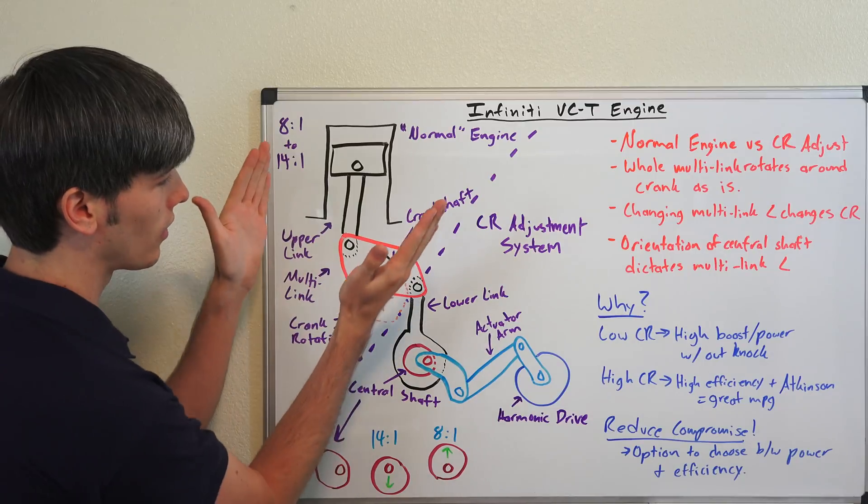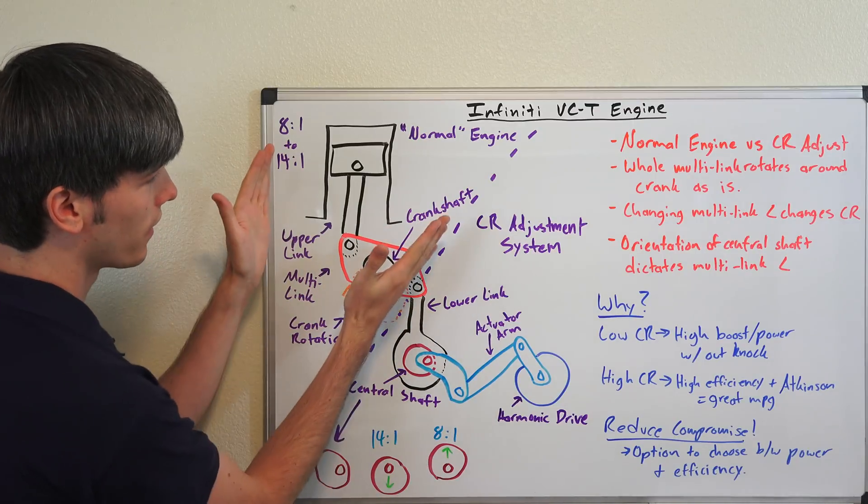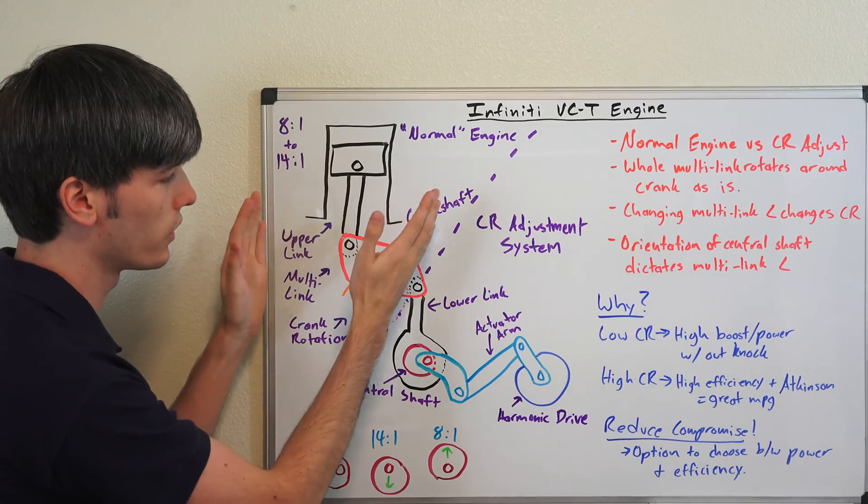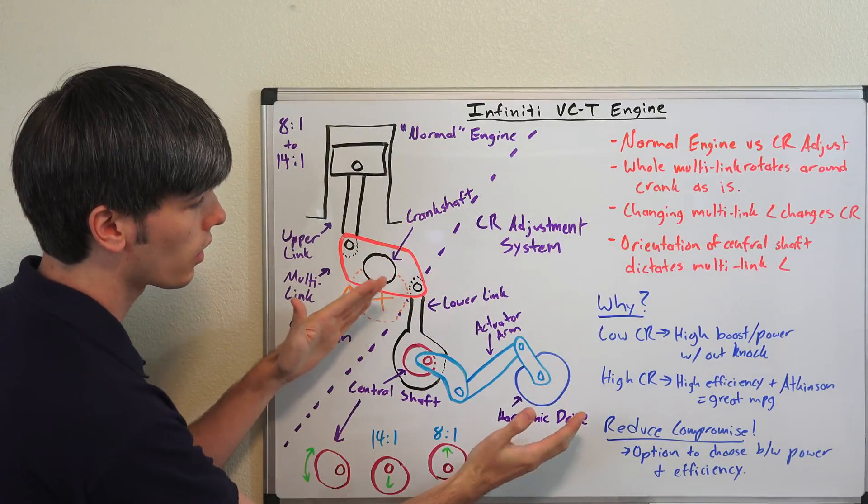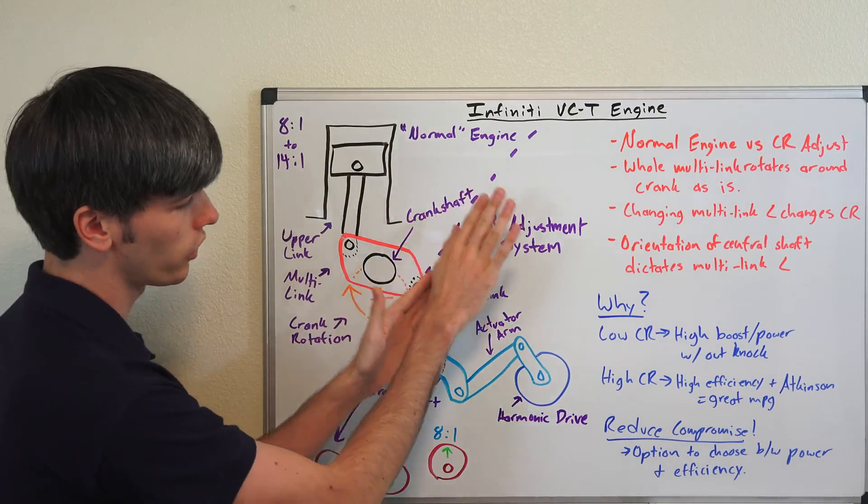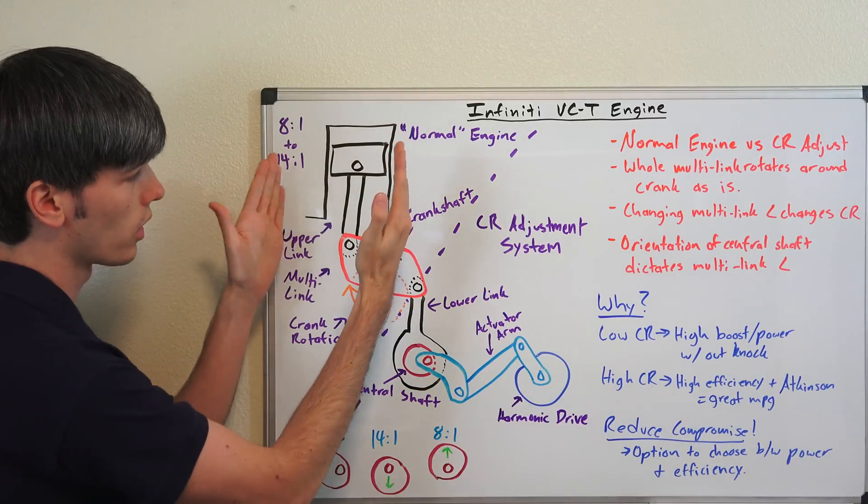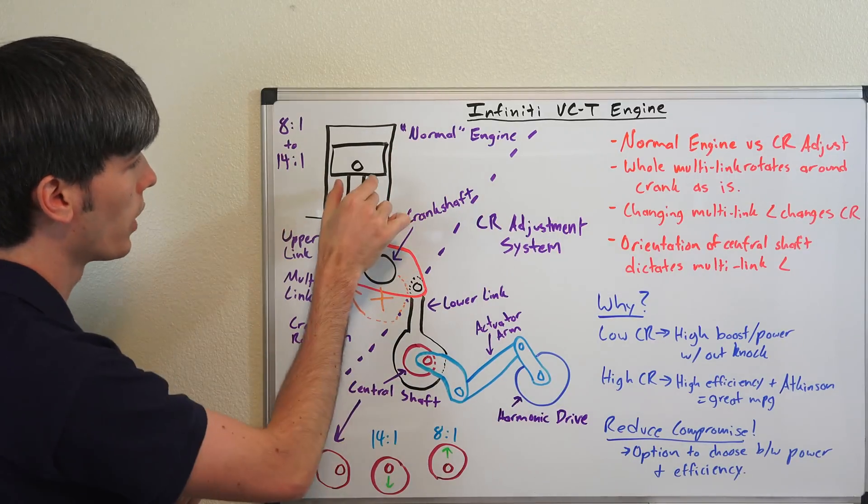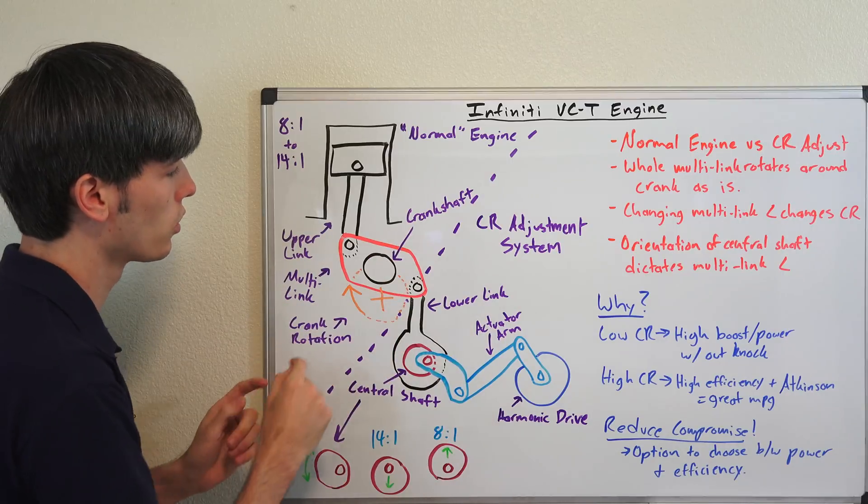The way I want to do this is look at this in two different sections. This top section here, which is just going to be like a normal engine, and then this lower section here, which is going to be used to adjust the compression ratio. So for now, let's just ignore everything below this and look at what we've got going on up top. Here we have our piston, the connecting rod, the cylinder, everything like usual.